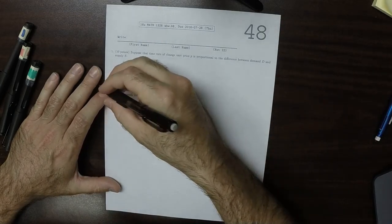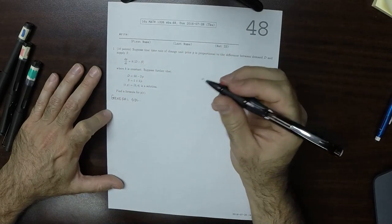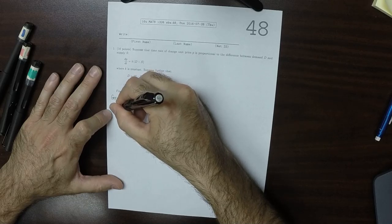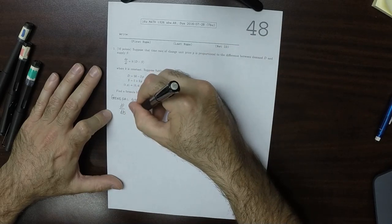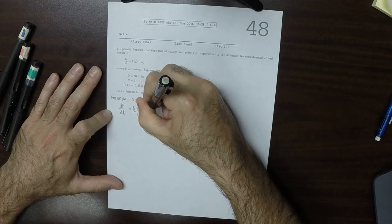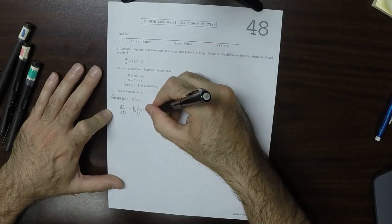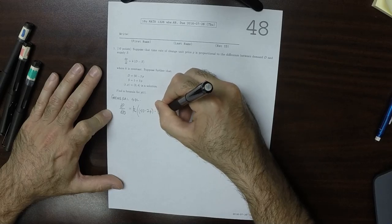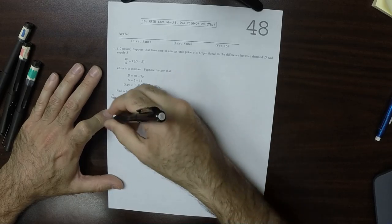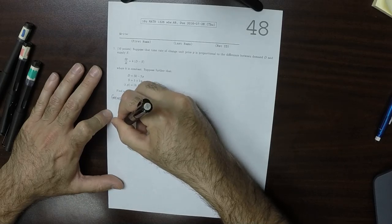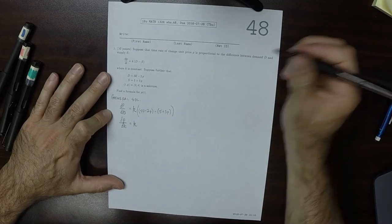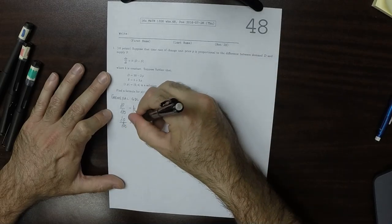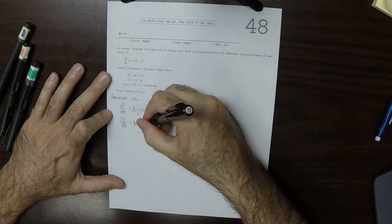So we'll find the general solution first. So dp/dt is k, and then d is 50 minus 2p, minus s is 5 plus 3p. And simplifying this, that is, k is equal to, so that would be 45 minus 5p.